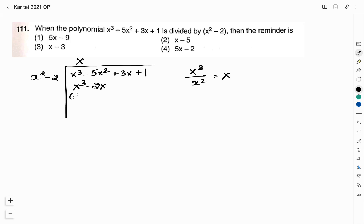x square into x is x cube minus 2x. We will just change the sign so as to simplify. x cube gets cancelled with one another and minus 2x becomes plus 2x. Here we have minus 5x square, I will write it as such. Then plus 3x plus 2x, we get 5x and this one also I will bring down plus 1.